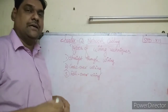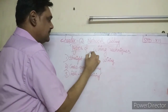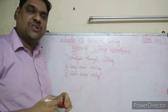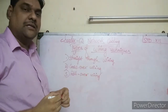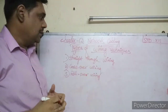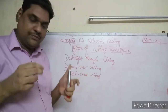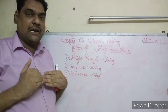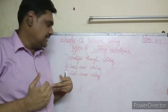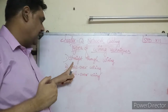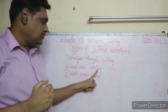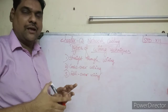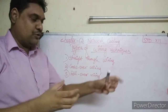Now let us see the types of wiring techniques, which is the last topic in chapter 13, network cabling. When connecting devices using Ethernet cables, there are three wiring techniques: straight-through wiring, crossover wiring, and rollover wiring.